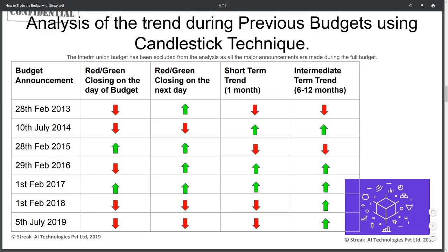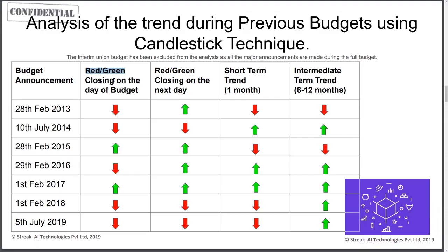Moving on to analysis of trend during previous budget days using the candlestick technique. Here we are looking at whether the day candle on which the budget was announced was red or green, along with the next day close, the short-term trend, and the intermediate trend. Interim budgets have been excluded — only major announcements made during the full budget are considered. This is true for the previous table as well.